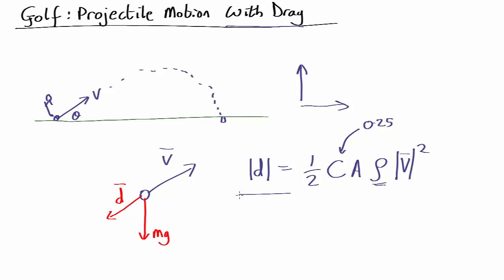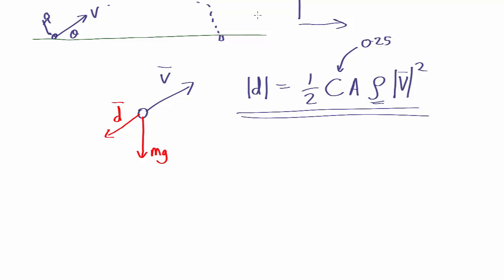This tells us the magnitude of the drag force but it doesn't tell us the direction. To calculate the projectile motion we're going to need to know the direction of the force. It's a vector quantity. So let's see if we can rewrite this in vector form.